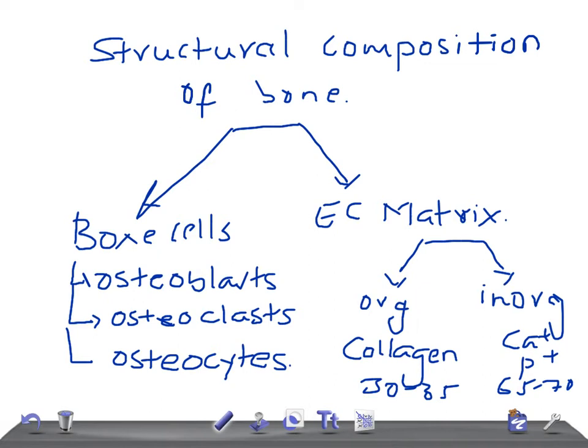To summarize: bone has two components — bone cells and extracellular matrix. Bone cells include osteoblasts, osteoclasts, and osteocytes, which I'll cover in the next video. The extracellular matrix has organic and inorganic types; organic collagen constitutes thirty to thirty-five percent and inorganic calcium and phosphorous salts make up sixty to seventy percent of the bone.